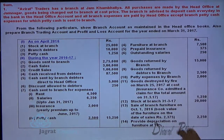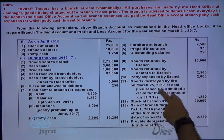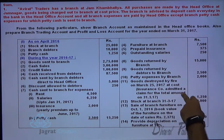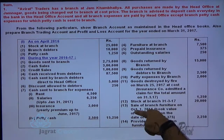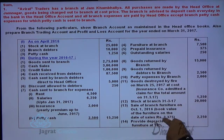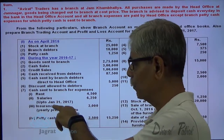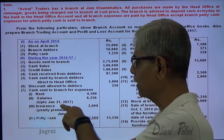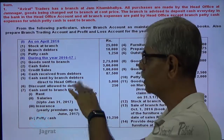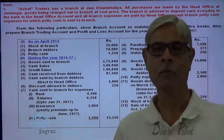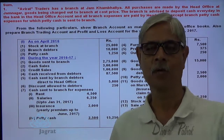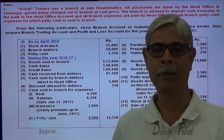The important points are: goods destroyed by fire on 25th March 2017 at cost, and the insurance company admitted a claim for the total amount on 31st March 2017. Also, sale of branch furniture on 1st October 2016 — the book value of furniture on the date of sale was 2375, and the amount from the sale was 2250. Over and above, salary paid up to January 31, 2017, and yearly insurance premium. These are the important transactions.